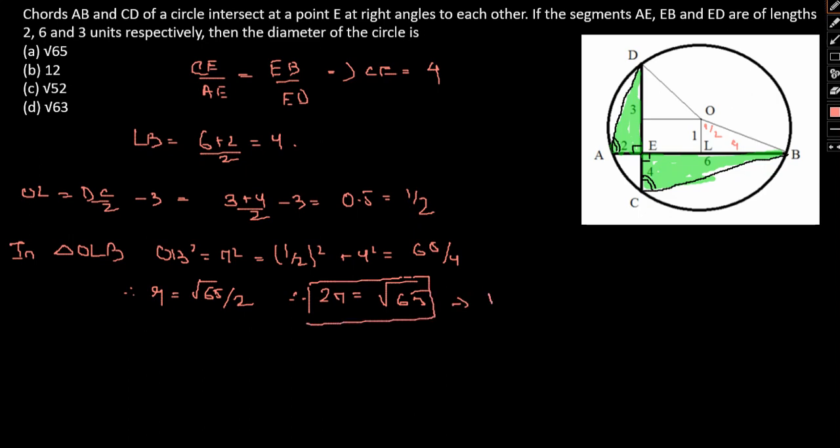Twice R will be equal to root 65, which is our answer. Or basically, diameter will be equal to root 65. So, if we go by the options, then option A is our correct answer.